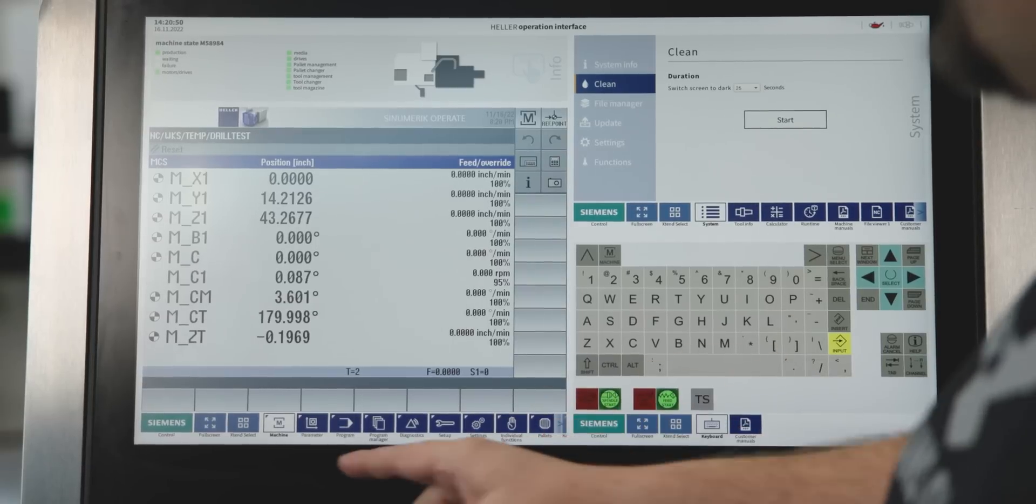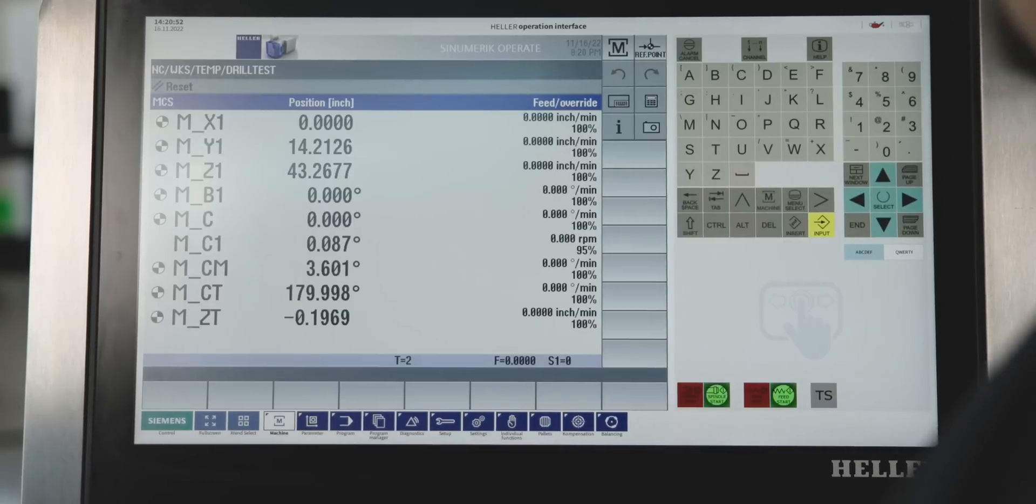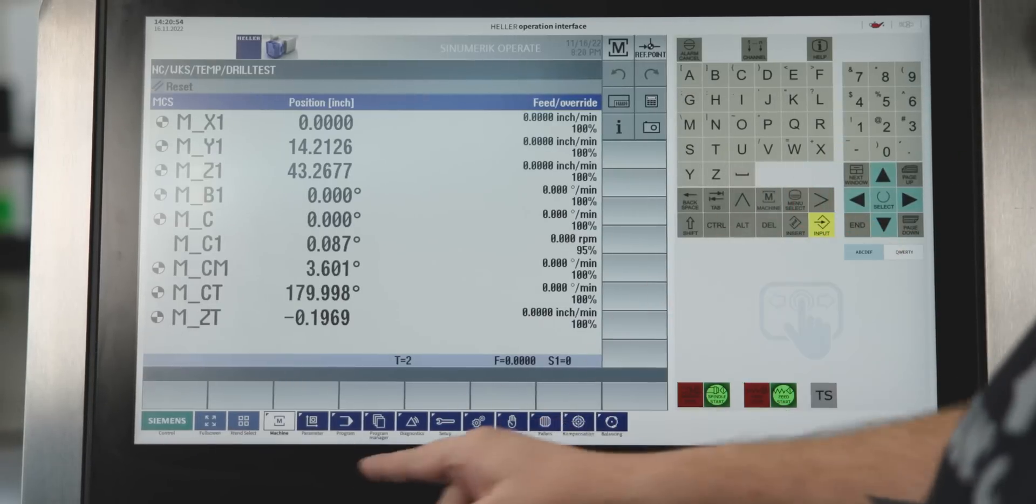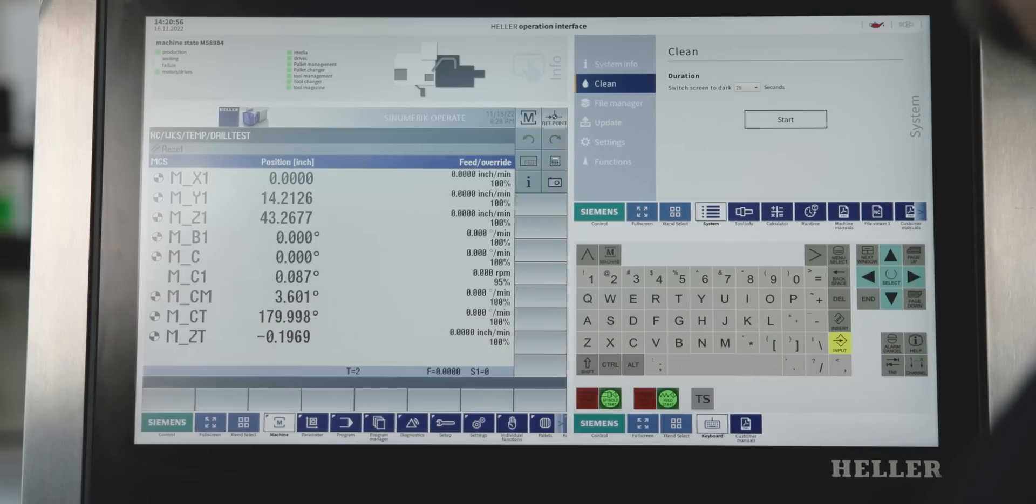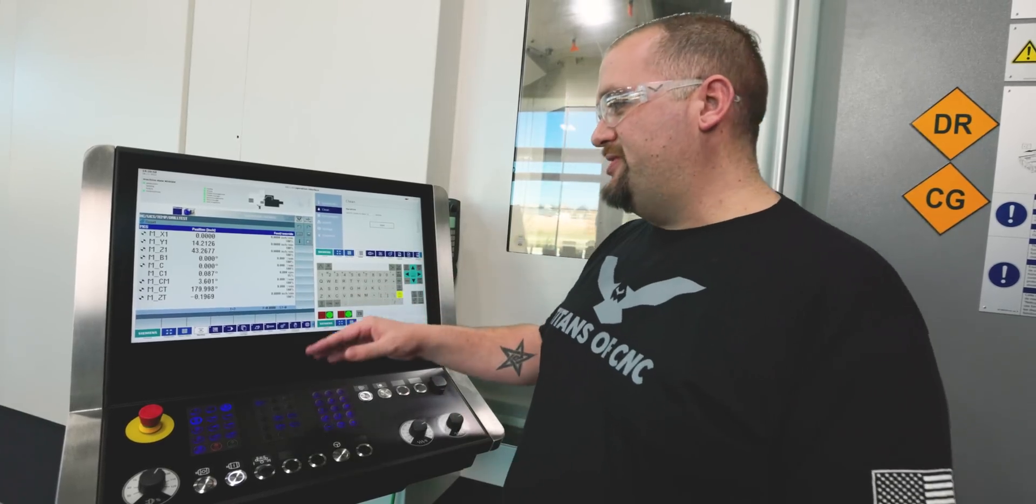If at any time I want to go into full screen mode, I can just hit full screen. Boom! I got my control display. If I want to get out of there, I just hit full screen again. Super easy. Everything's super easy to find.